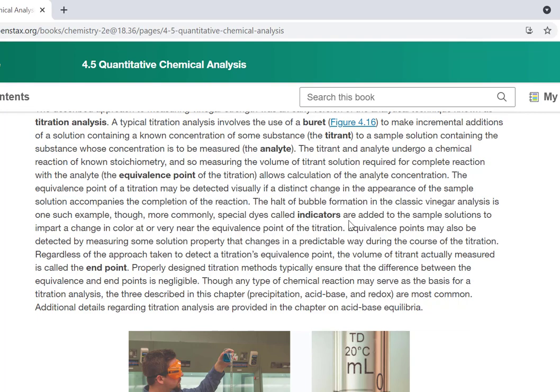That will often change colors based on selecting properties such that they match what happens at or near the equivalence point. And the actual measured place when we stop is called the end point, and we assume that the end point and the equivalence point are close enough together that when we do that calculation, we'll end up with the right result.